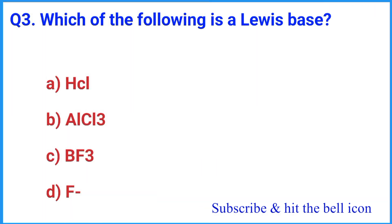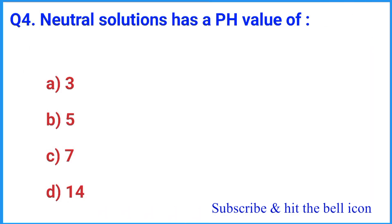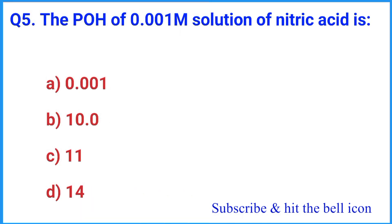Question number 3: Which of the following is a Lewis base? The correct answer is option D: F minus. Question number 4: A neutral solution has a pH value of — options are A: 3, B: 5, C: 7, and D: 14. The right answer is option C: 7.